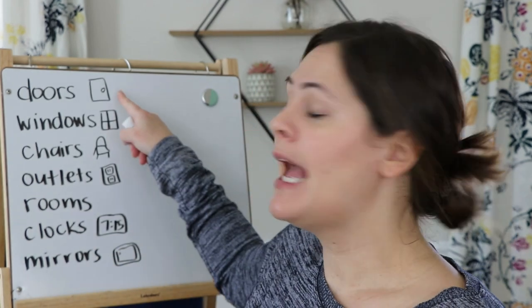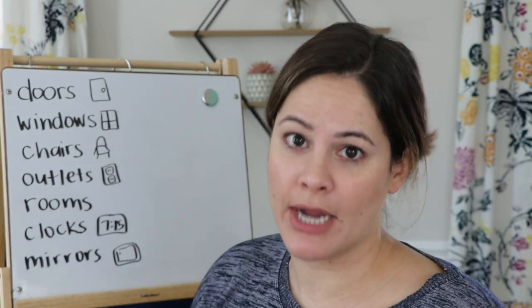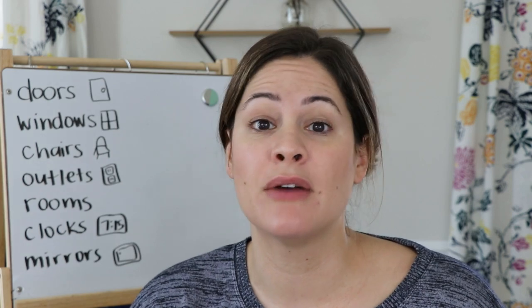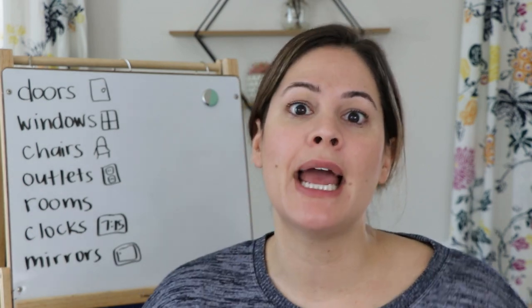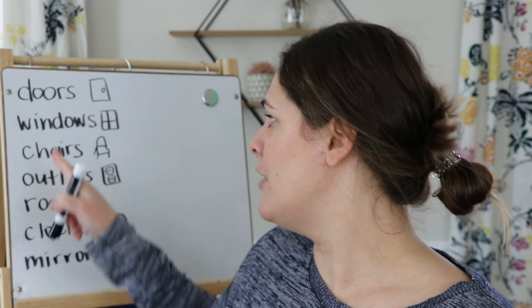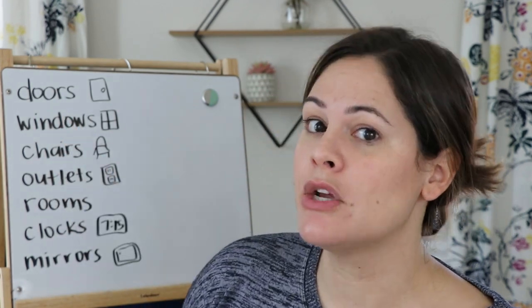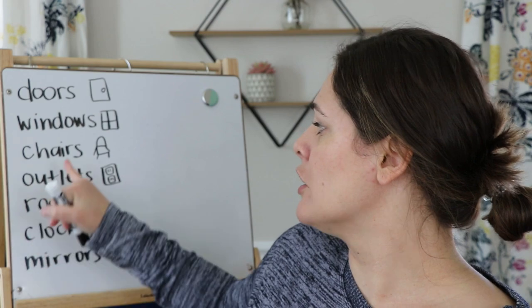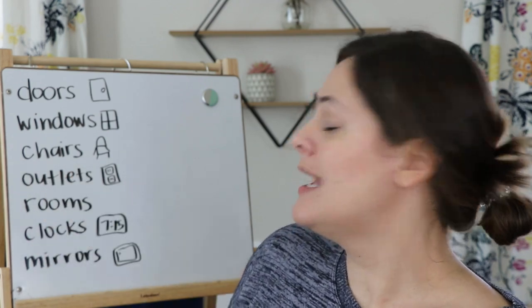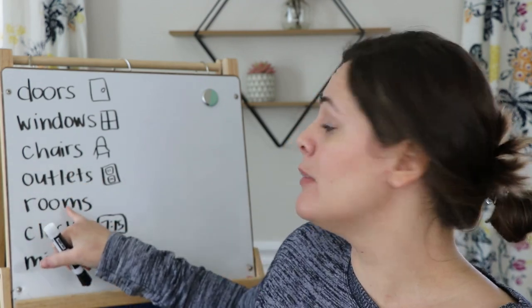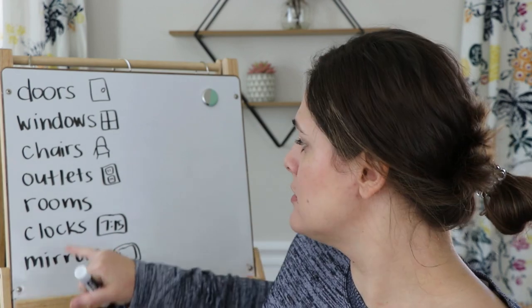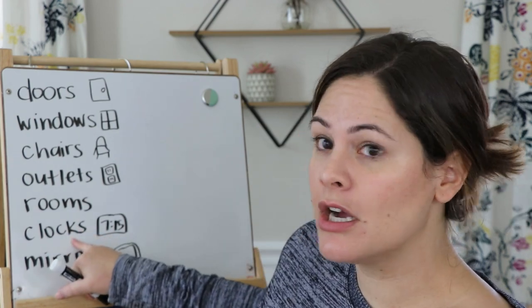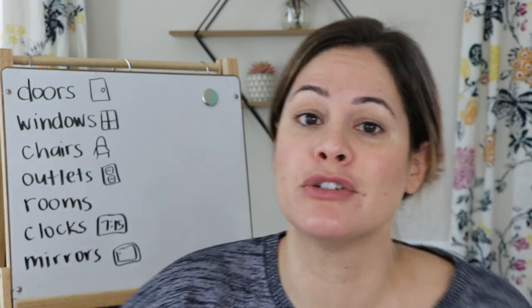First you need to find how many doors are in your house. Then you're going to count up how many windows there are, how many chairs, how many outlets, how many rooms you have in your house, how many clocks there are, and how many mirrors you can find in your house.